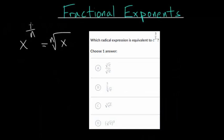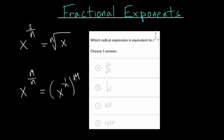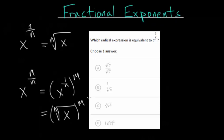Now, in this video we want to expand and look at what happens when instead of having a 1 in the numerator, you have some other number. So the general idea: if we have x to the m over n, we could rewrite this using exponent properties as x to the 1 over n, all raised to the m power. An exponent to an exponent is just multiplication, and we know that x to the 1 over n is just the nth root of x. So this is the nth root of x raised to the m power.